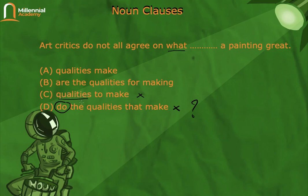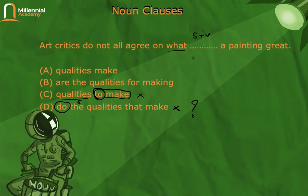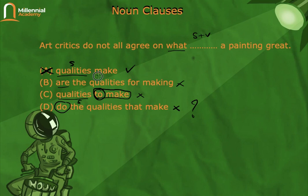Option C — 'what qualities' — has a subject, but no verb. 'To make' is not a verb because of the 'to.' So C is also wrong. Option B — 'what are the qualities for making a painting great' — forms a question again, so B is also wrong. Therefore the correct answer is A: 'Art critics do not all agree on what qualities make a painting great.' Here 'qualities' is the subject and 'make' is the verb.